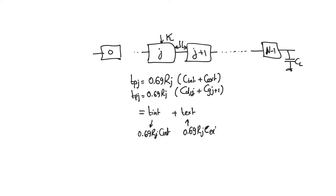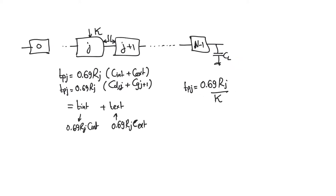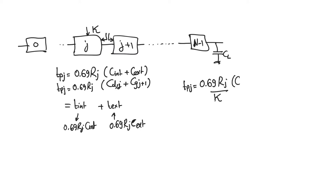The delay for stage j is composed of two components: T_internal plus T_external, where T_internal = 0.69·Rj·C_internal and T_external = 0.69·Rj·C_external. Now, if we multiply the aspect ratios of all transistors in gate j by k, the resistance Rj decreases by a factor of k (since resistance is inversely proportional to width). The intrinsic capacitance increases by k, and the external capacitance from the next stage is not affected.